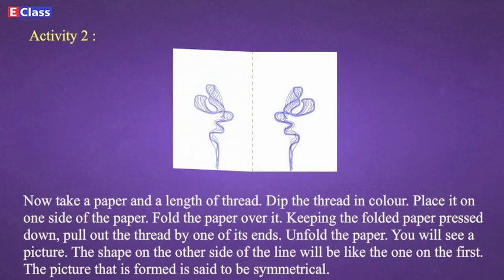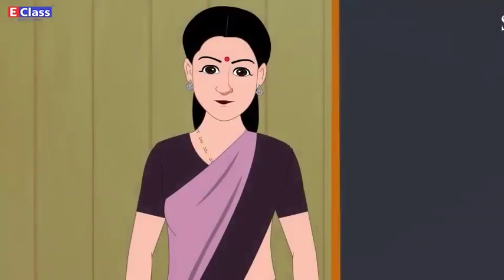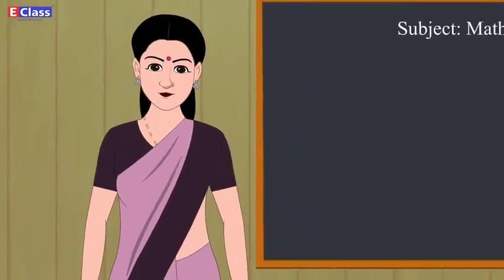Unfold the paper. You will see a picture. The shape on the other side of the line will be like the one on the first. The picture that is formed is said to be symmetrical.